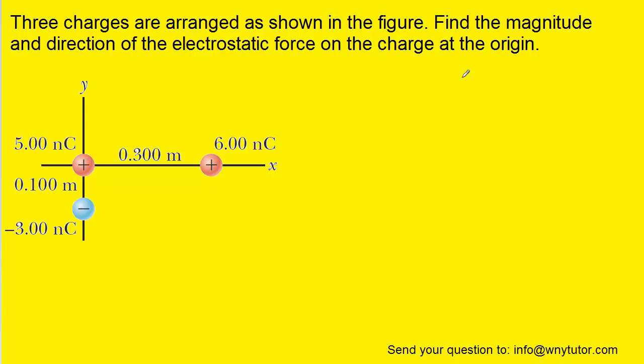Before we can calculate the magnitude and direction of the electrostatic force on the charge at the origin, we want to give some labels to each charge. We could call the charge at the origin A, the charge over here B, and then the third charge C.